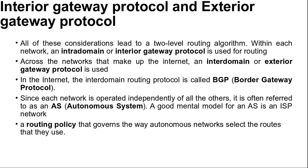In the internet, the inter-domain routing protocol is called BGP, Border Gateway Protocol. Since each network is operated independently of all the others, it is often referred to as an AS, or Autonomous System. A good mental model for an AS is an ISP network. An ISP network may be comprised of more than one AS if it has been managed or acquired as multiple networks. The two levels are usually not strictly hierarchical, as highly sub-optimal paths might result if a large international network and small regional networks were both abstracted to be a single network.